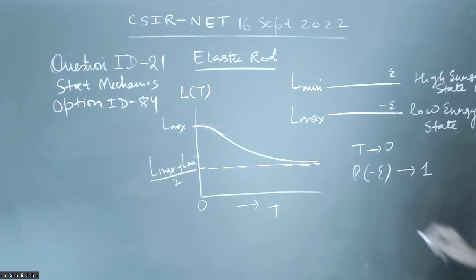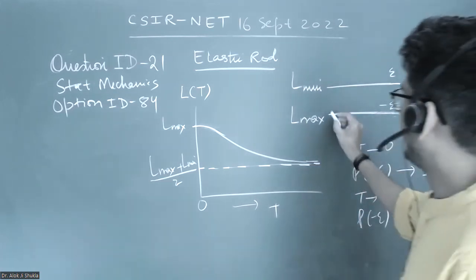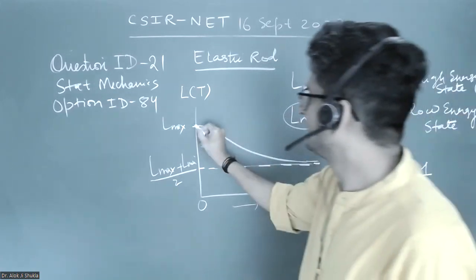And at very high temperatures, the probability of going into any level minus E or plus E will be half. So that means when temperature is very low, it will have the value L max.